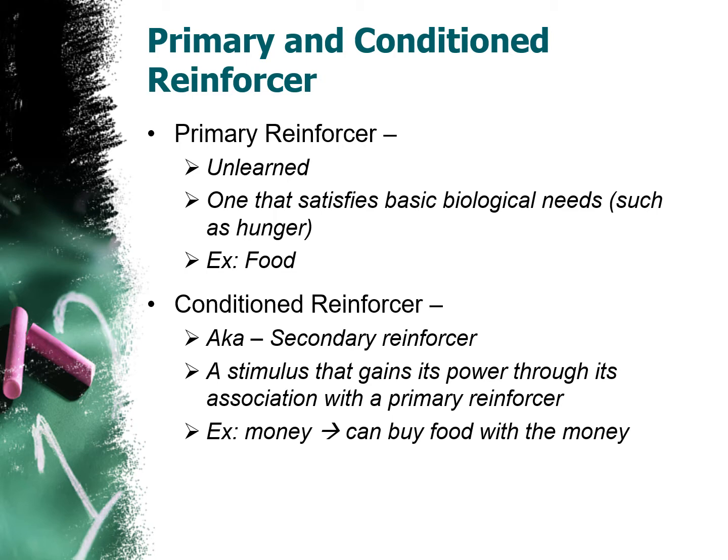Primary reinforcers are things you do naturally — unlearned things you need like food and water. Conditioned reinforcers are things associated with primary reinforcers, like money or grades. Because grades can get you a good job, which can therefore get you money.